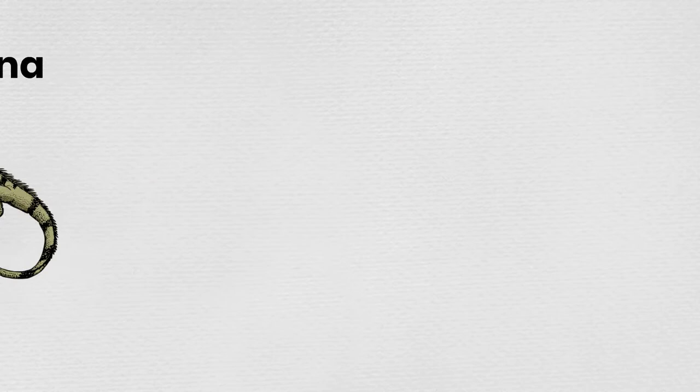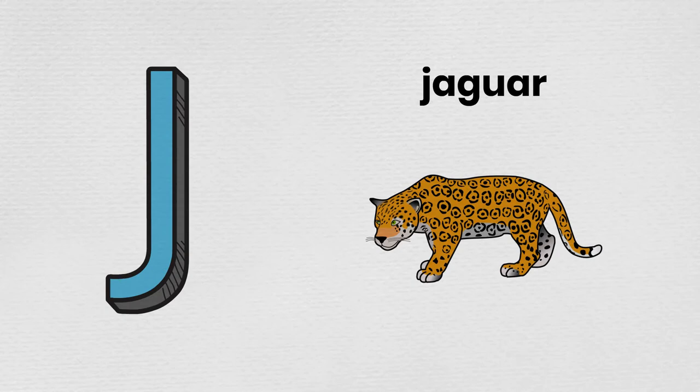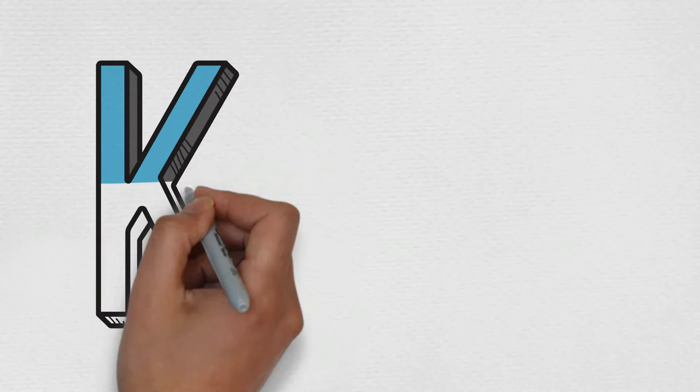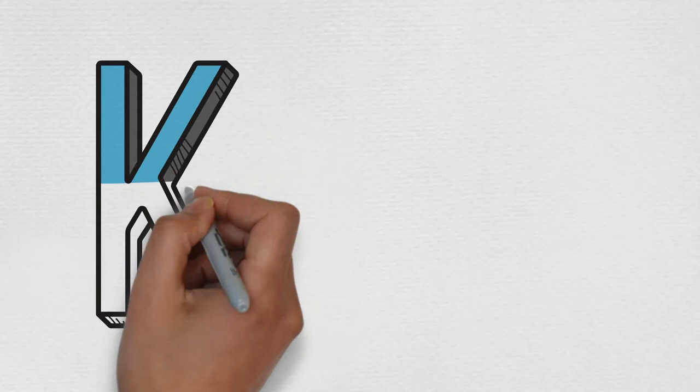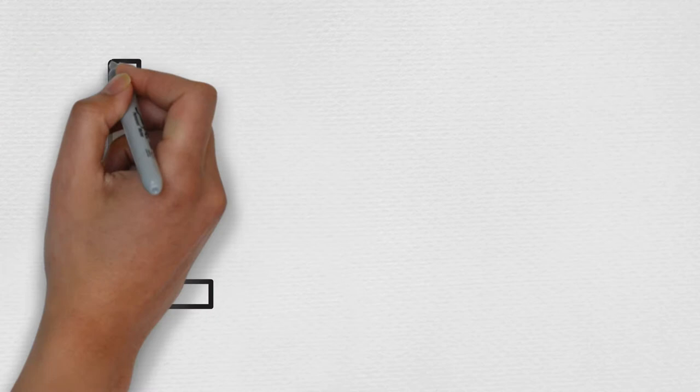I is for iguana. J is for jaguar. K is for kingfisher. L is for lion.